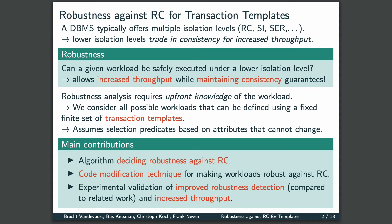In practice, it might happen that workloads are not robust against Read Committed. In that case, we propose a code modification technique that will slightly change the transaction templates to obtain robustness, without altering the semantics. Lastly, we verify through experiments that our approach is effectively able to detect more workloads as robust against Read Committed when compared to related work, and that selecting Read Committed for robust workloads indeed results in an improved transaction throughput.